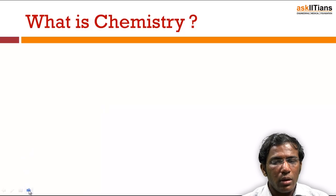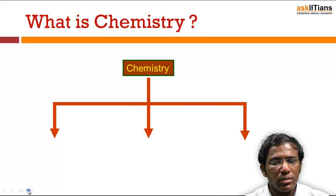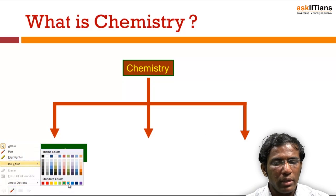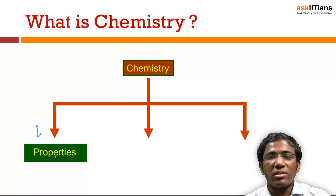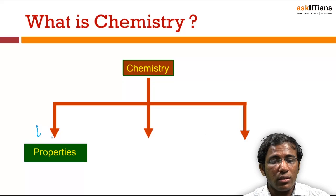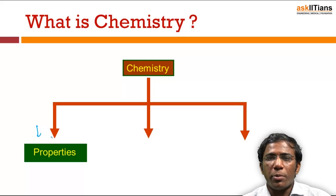Chemistry is about studying three things. One is properties. We have many substances around us, and in chemistry we study about the properties of chemical substances. Properties may be physical properties or chemical properties. Physical properties include melting point, boiling point, solubility, and density. We also learn about chemical properties such as reactivity.